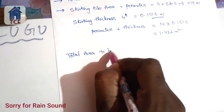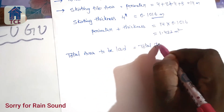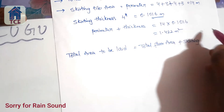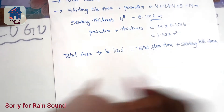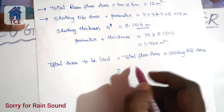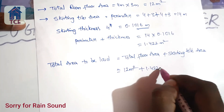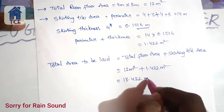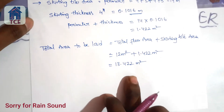The total area to be laid — adding the floor area and the cutting area together — gives us 13.422 square meters. This is the total area for tile calculation.